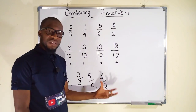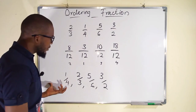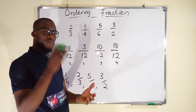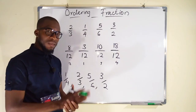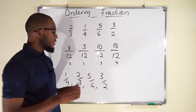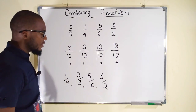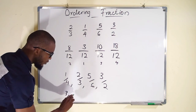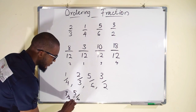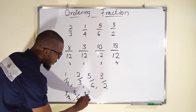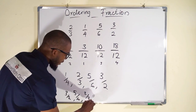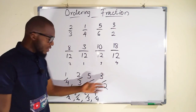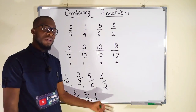So now we have written our fractions in ascending order from the smallest to the biggest. If we are talking about descending order, we have to start from the biggest to the smallest: 3 over 2, followed by 5 over 6, followed by 2 over 3, and lastly 1 over 4. So this is ascending order, and this is descending order.